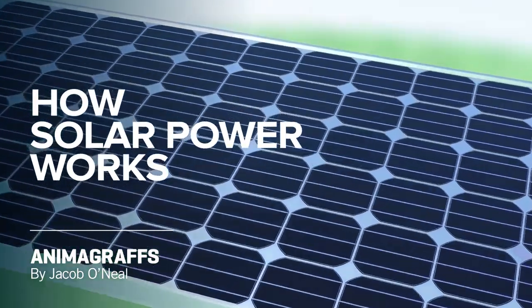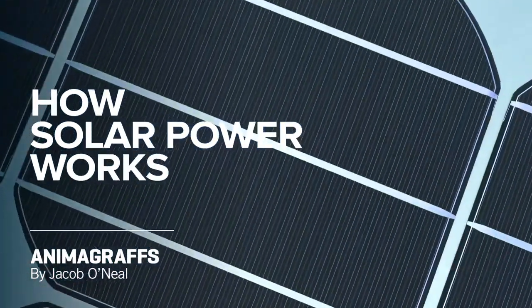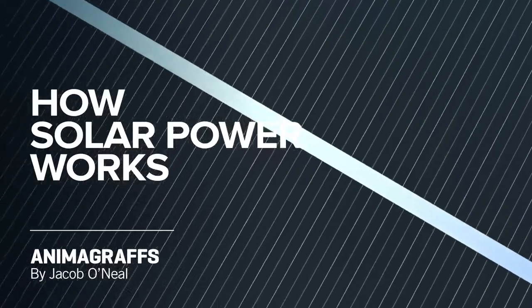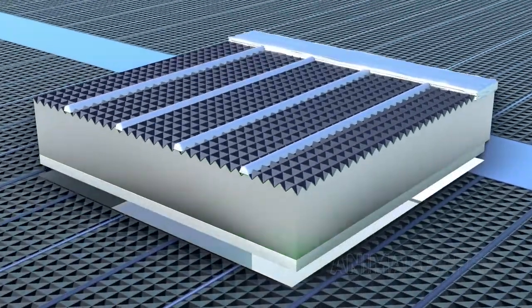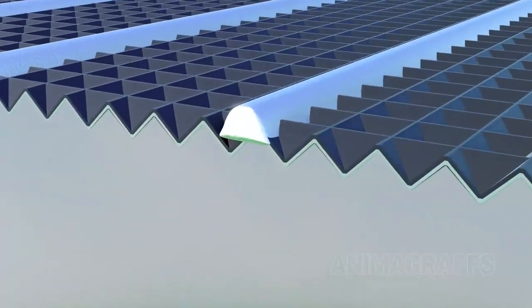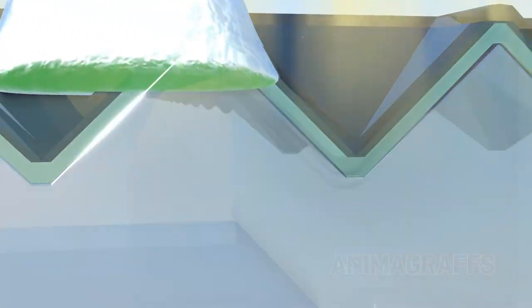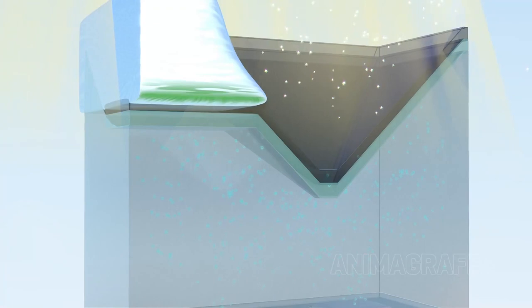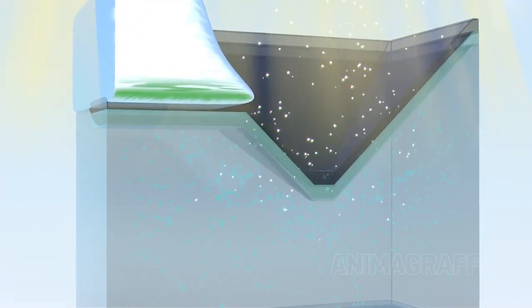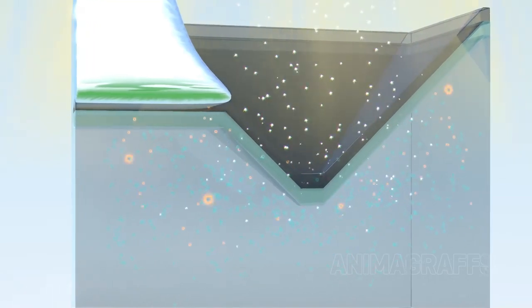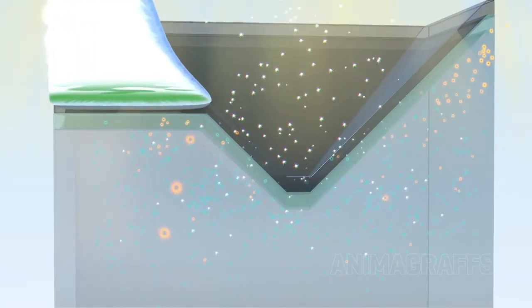I'm Jake O'Neill, creator of AnimaGraphs, and this is how solar power works. Let's start in the heart of a single solar cell. Particles of light, which we call photons, enter the solar cell and are absorbed by available electrons, exciting the electrons to a higher energy level.